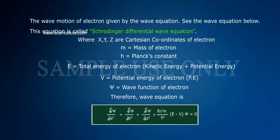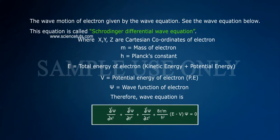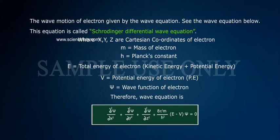The wave motion of electron given by the wave equation. See the wave equation below. This equation is called Schrodinger Differential Wave Equation where x, y, z are Cartesian coordinates of electron, m equals mass of electron, h equals Planck's constant, E equals total energy of electron (kinetic energy plus potential energy), V equals potential energy of electron (P.E.), psi equals wave function of electron.